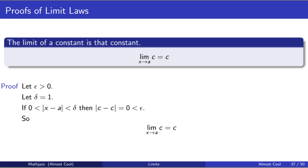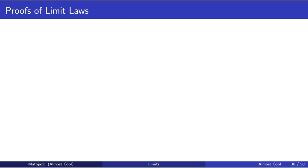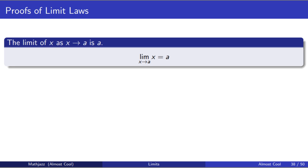The limit of c as x goes to a is c. The next one we're going to prove is that the limit of x as x goes to a is a. Stated more colloquially, x goes to a as x goes to a. This should be obvious, but we do need to prove it. The first step is we let epsilon be greater than zero. Now we have to find some delta that will work for epsilon. This is the creative part of these proofs — finding some formula for delta. In this case, our delta will just be epsilon.